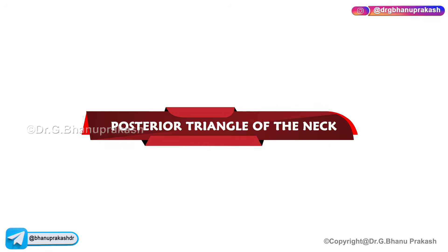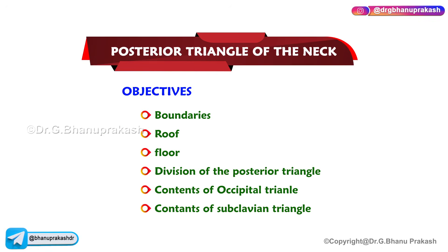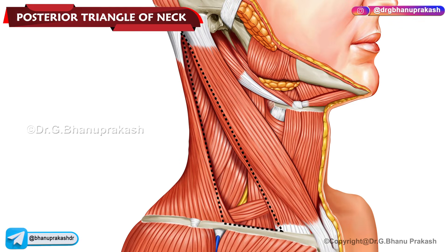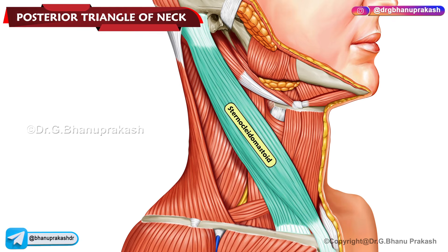Posterior Triangle of the Neck. The posterior triangle is a space in the side of the neck situated behind the sternocleidomastoid muscle.